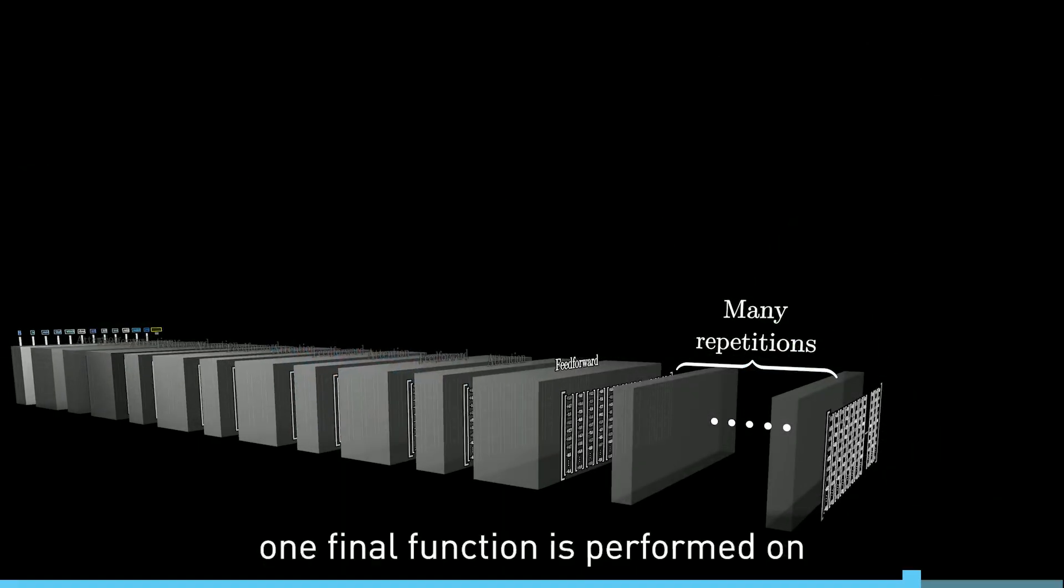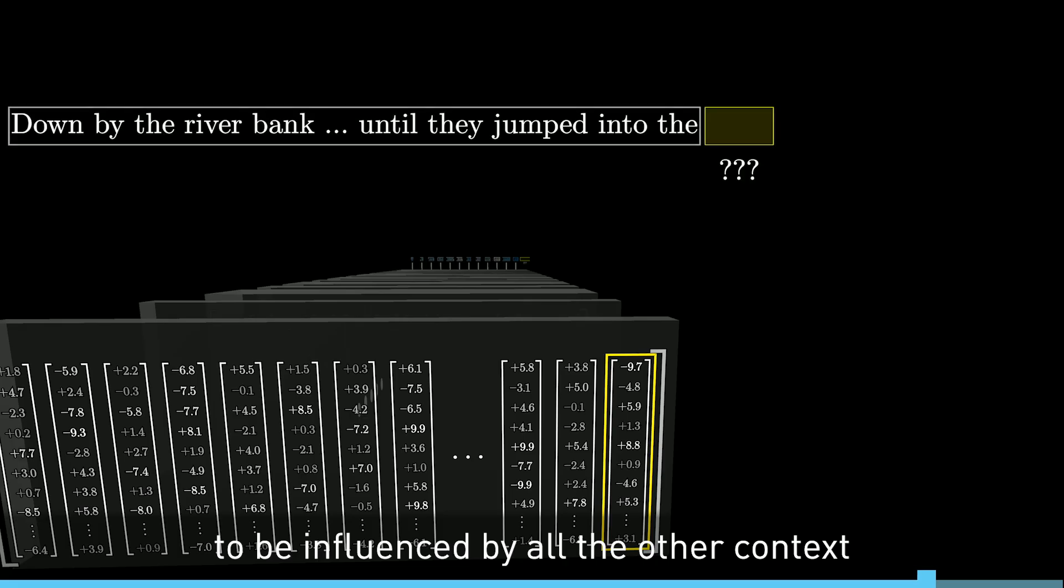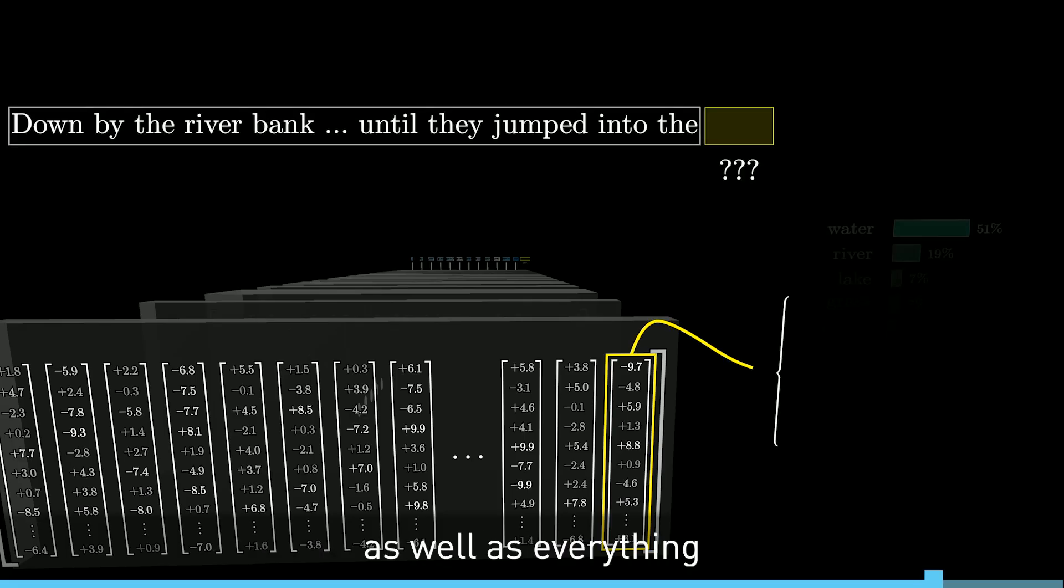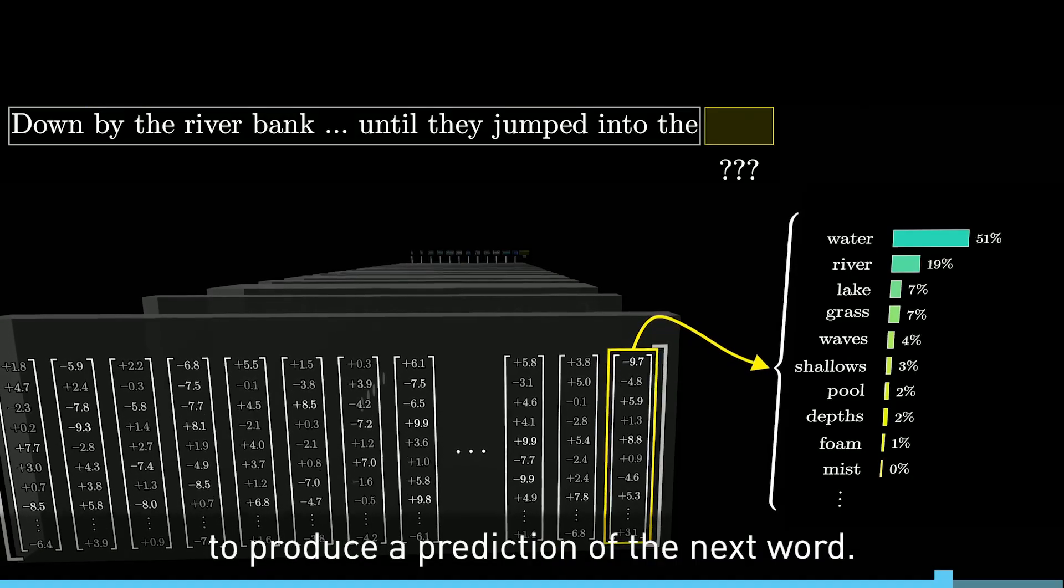At the end, one final function is performed on the last vector in this sequence, which now has had a chance to be influenced by all the other contexts from the input text, as well as everything the model learned during training, to produce a prediction of the next word.